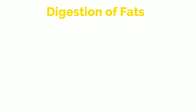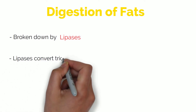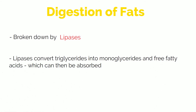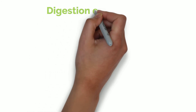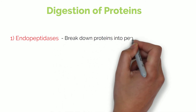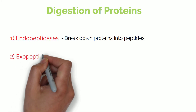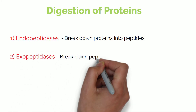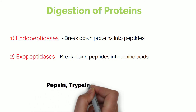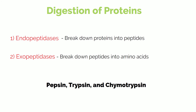The breakdown of fats involves enzymes called lipases — which sounds like lipids, so it's easy to remember. Lipases convert triglycerides into monoglycerides and free fatty acids, which can then be absorbed. The breakdown of proteins involves a few more enzymes: a set called endopeptidases break down proteins into peptides, and then another set called exopeptidases break down the peptides into amino acids. Some important enzymes involved in protein breakdown are pepsin, trypsin, and chymotrypsin.